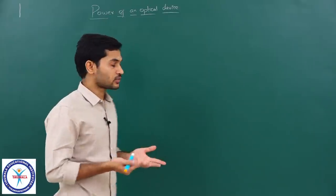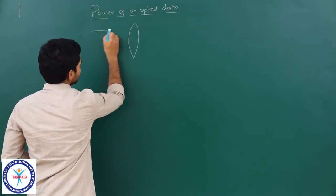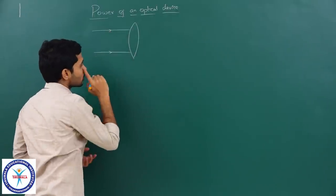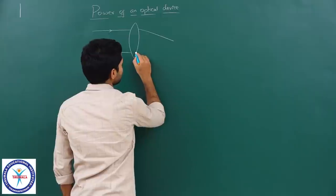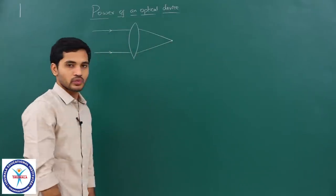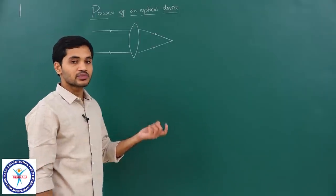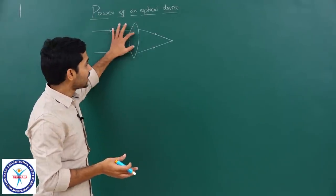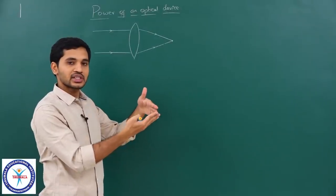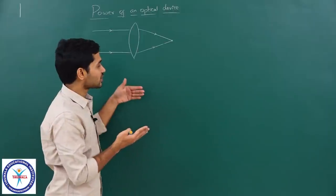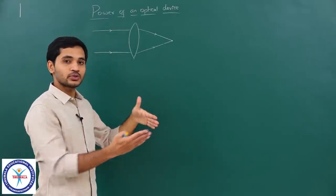Optical power is basically the ability of the device. We know that whenever we have a convex lens, if light is incident on it, the convex lens has the ability to converge those light rays. Power of a device measures the ability of this lens to converge the light rays. If it is able to converge easily, then we say that the power is more.